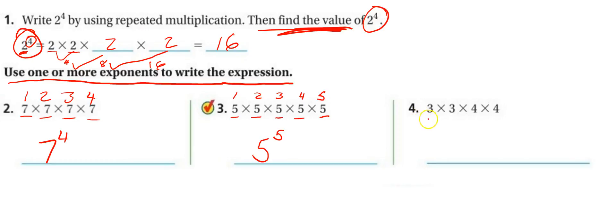Okay, number 4. 3 is repeated twice. 4 is repeated twice. So 3 is one base, and it's repeated twice. And then times, we have to keep this time sign. 4 is repeated, and 4 is also repeated twice. So this time we have 3 to the second power, or 3 squared times 4 squared. And that's it. It doesn't ask us to find the value, so we don't need to.